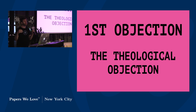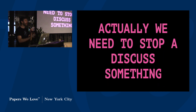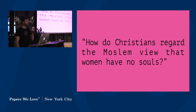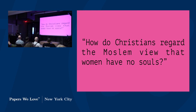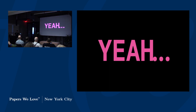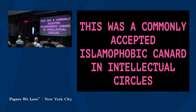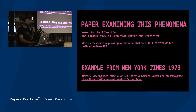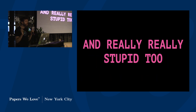The first objection he brings up is the theological objection: that machines don't have souls. We need to stop and discuss something here. Turing says in this section, and I quote: 'How do Christians regard the Muslim view that women have no souls?' This was actually a commonly accepted Islamophobic canard in intellectual circles at the time. There are papers examining this, and there are things from the New York Times in 1973 still repeating this untruth.